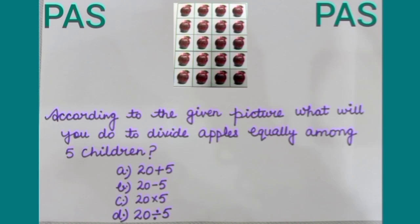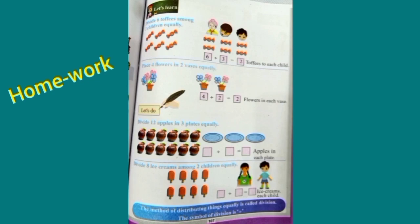Now, question for you. According to the given picture, what will you do to divide apples equally among 5 children? Students, you can see there are 20 apples given in the picture. If we have to divide these apples equally among 5 children, we will do division. Option A: 20 plus 5 — not correct. Option B: 20 minus 5 — not correct. Option C: 20 multiplied by 5 — also not correct. The right option is Option D: 20 divided by 5.